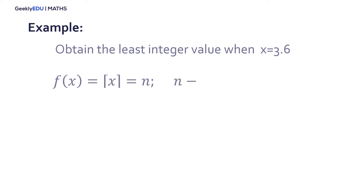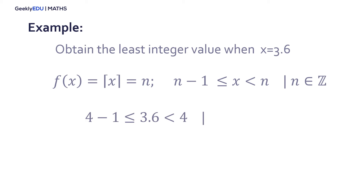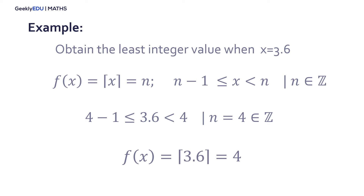Using this formula, we have that n minus 1 is smaller than x and x is smaller than n, where n is an integer. We know that 3.6 is between 3 and 4. In this case, n minus 1 equals 3, so 3 equals 4 minus 1, meaning n equals 4. Therefore, the least integer value of 3.6 is equal to 4.